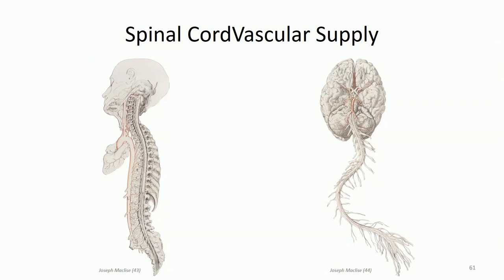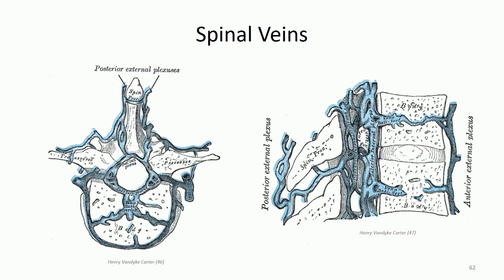The cervical region of the cord receives blood from branches off the vertebral arteries, the thoracic region from branches off the posterior intercostals, and the lumbosacral region from branches off the lumbar arteries. Branches from the lateral sacral artery supply the cauda equina. Drainage of blood from the spinal cord occurs through six vertical veins, then into anterior and posterior venous plexuses in the epidural fat, and finally back to the vena cava through segmental spinal veins accompanying the spinal nerves through the intervertebral foramen.